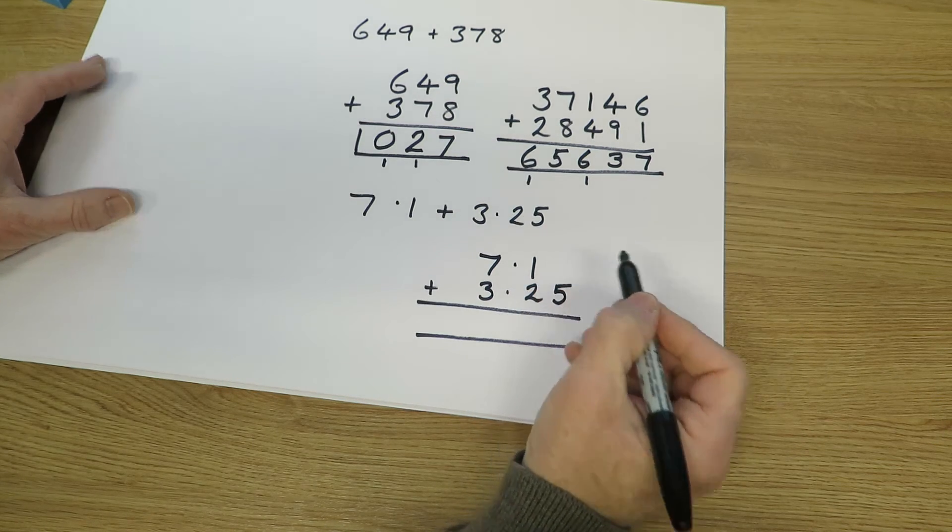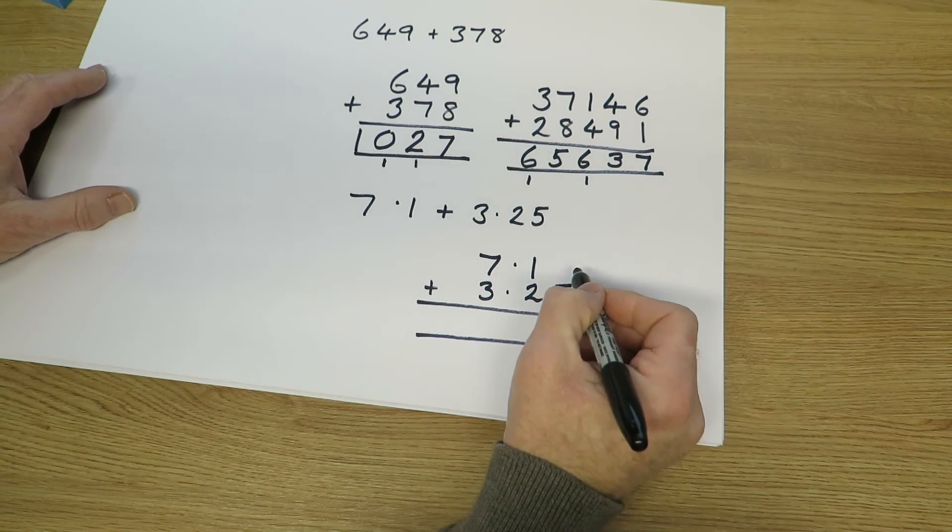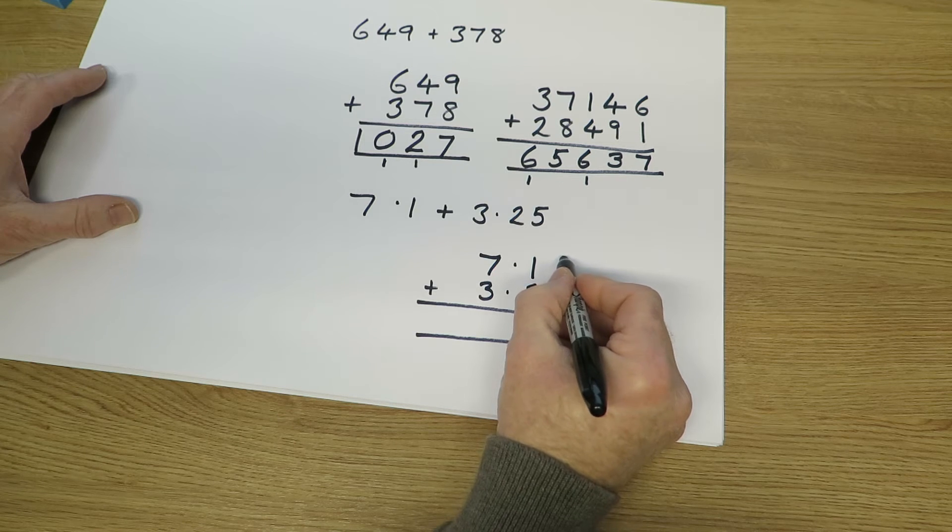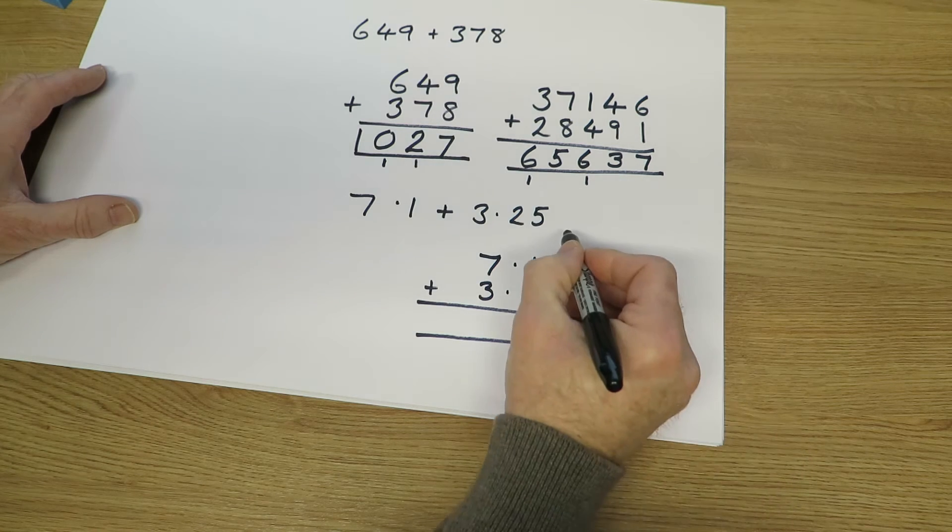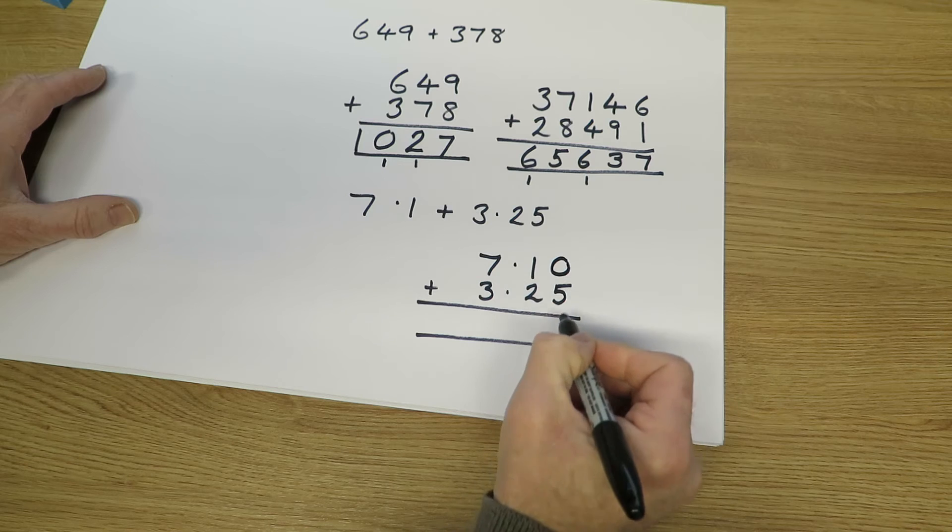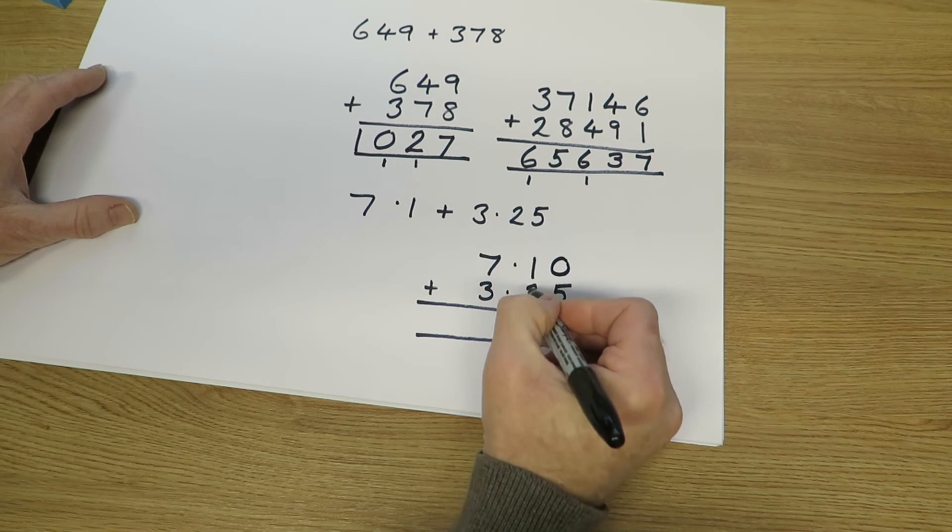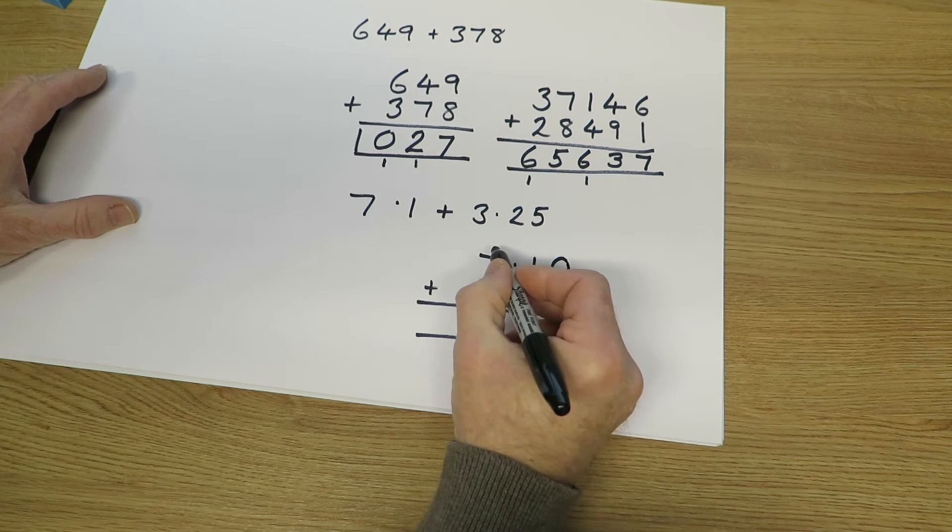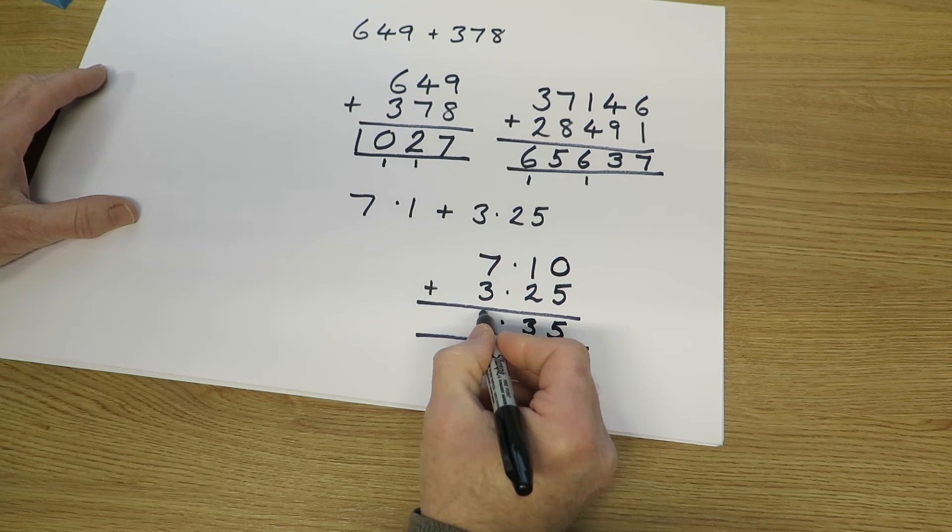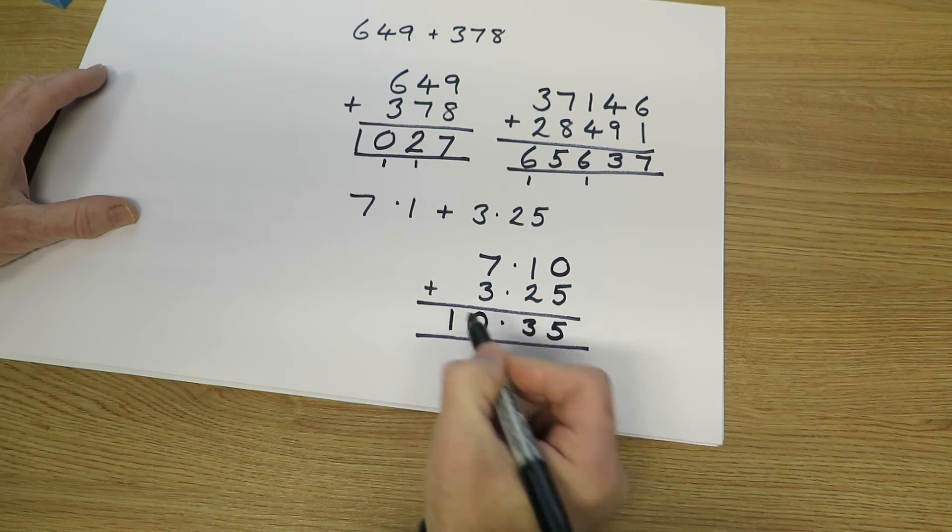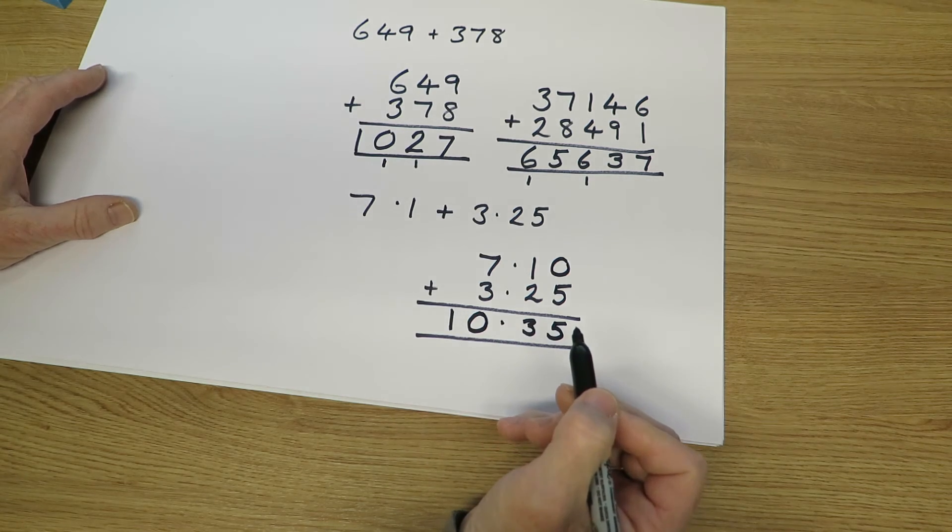Now some people like to put a zero in there. It's not strictly necessary but it can be done. So let's put it in this time. It doesn't have to be there. Adding the hundredths first then. 0 add 5 is 5. Adding the tenths. 1 add 2 is 3. Adding the units. 7 add 3 is 10. So clearly we've got zero in the units and one in the tens column. So the answer is 10.35.